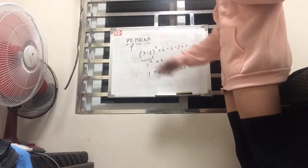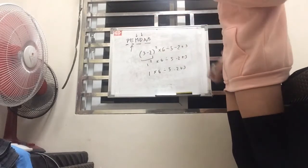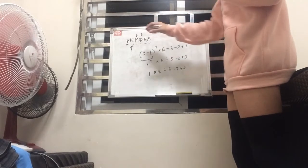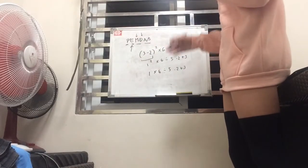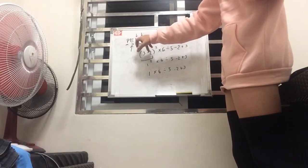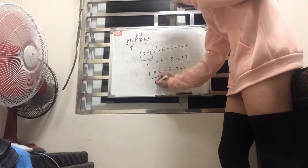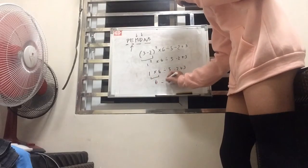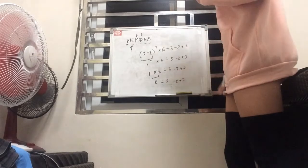And so according to PEMDAS, we have to do multiplication and division. But it really depends on you, because these two are actually switchable. But in this lesson, we're just going to be doing it in order. So multiplication, we multiply 1 and 6, and that gives us 6 divided by 5 minus 2 plus 3.